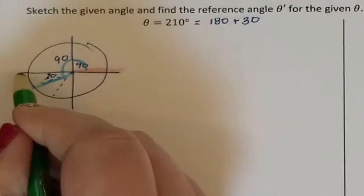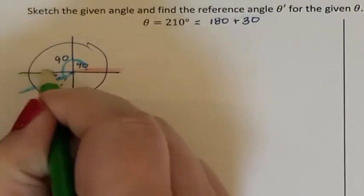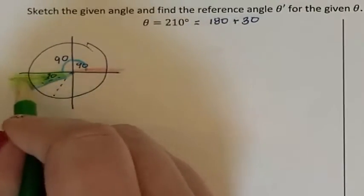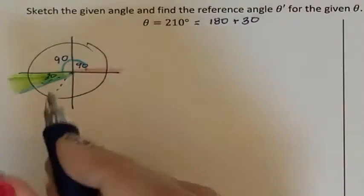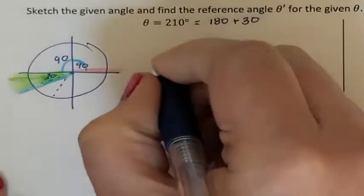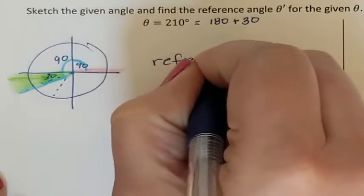The reference angle is how far is it from the closest x-axis. This is my closest x-axis. So what is my reference angle? That was 30 degrees. So my reference angle is 30 degrees.